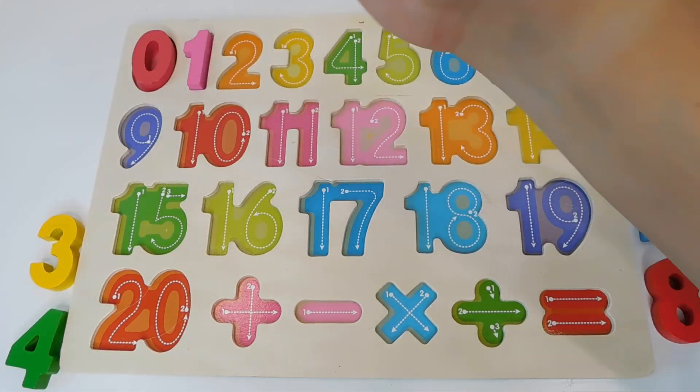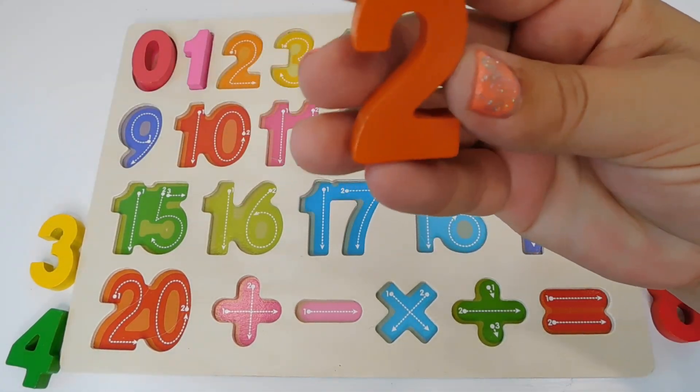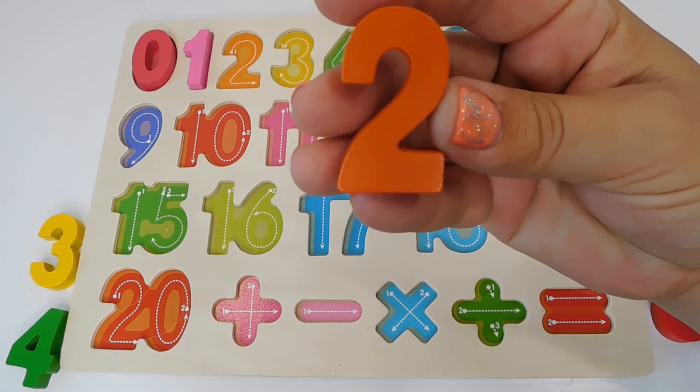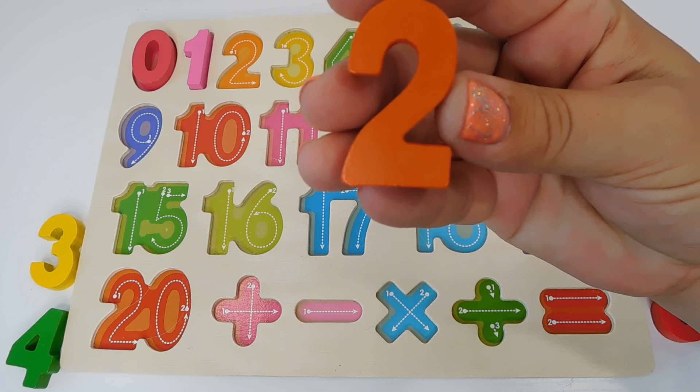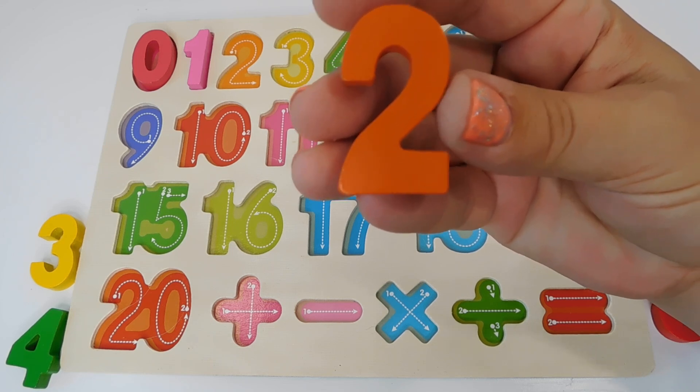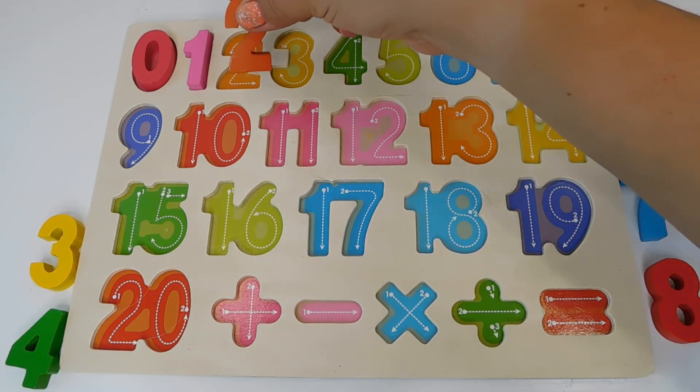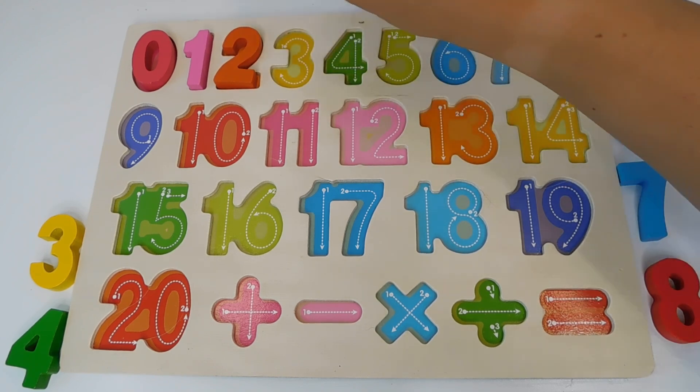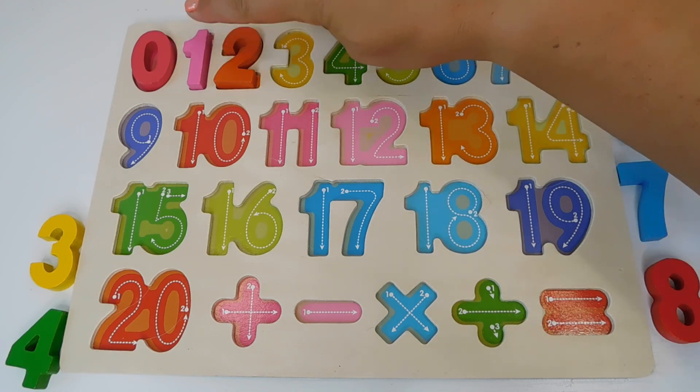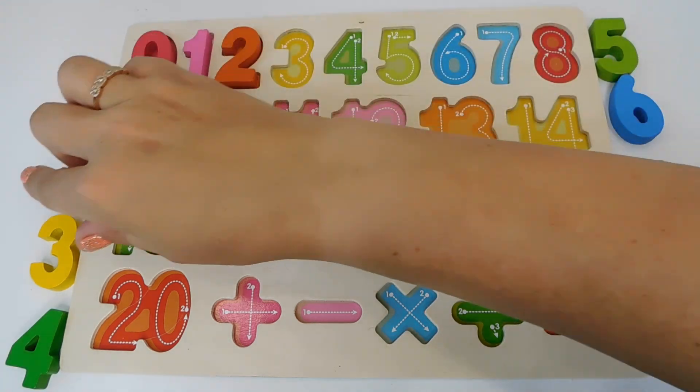Our next number is orange and this number is 2. Number 2. Where does the 2 go? Here it goes. We know 0, 1 and 2. We're doing so great.